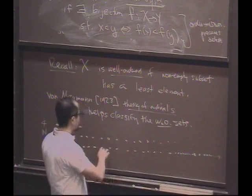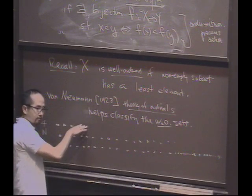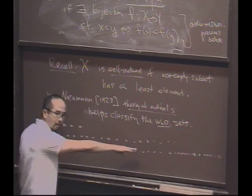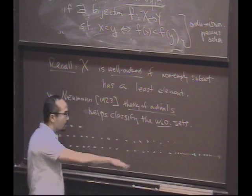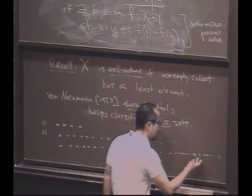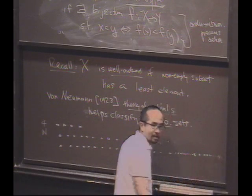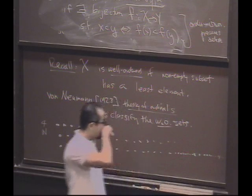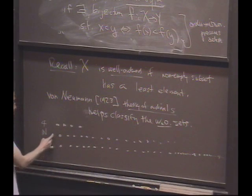How many points do we have in this set? Finitely many. How many here? Countably many. How many here? Also countably many. There's countably many here, another countably many here, and three more points here. So there are, in fact, many different well-ordered sets that have the same cardinality.